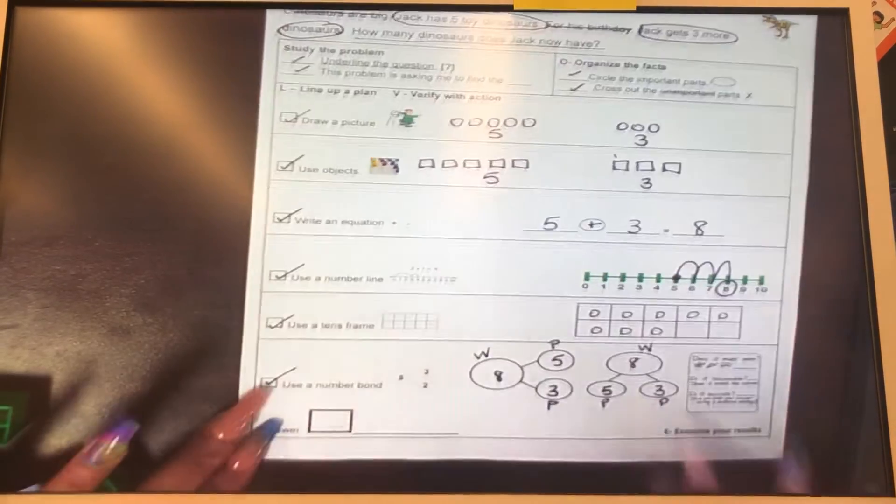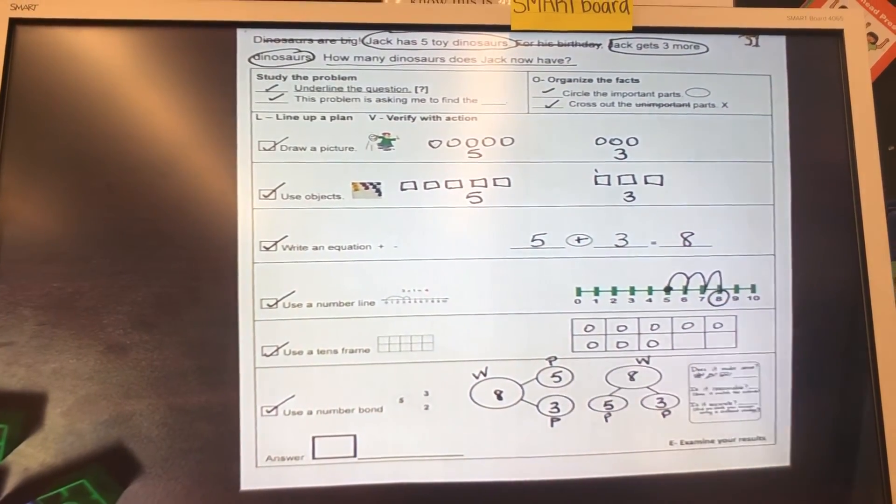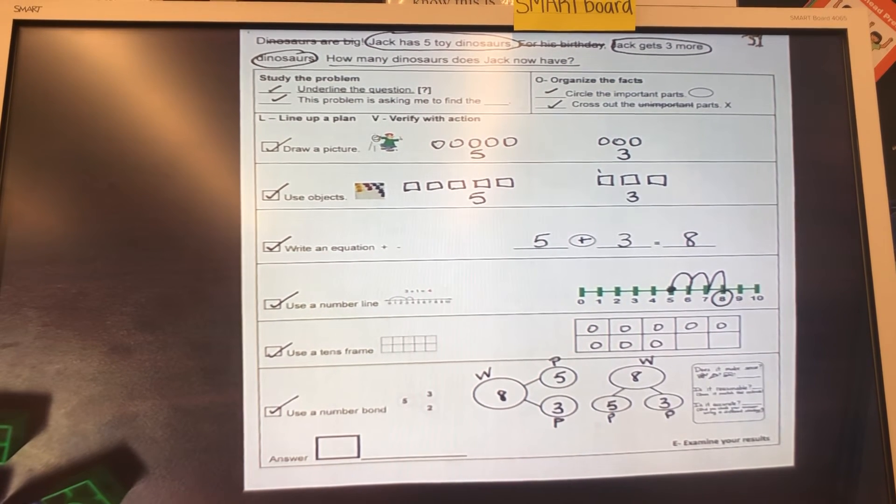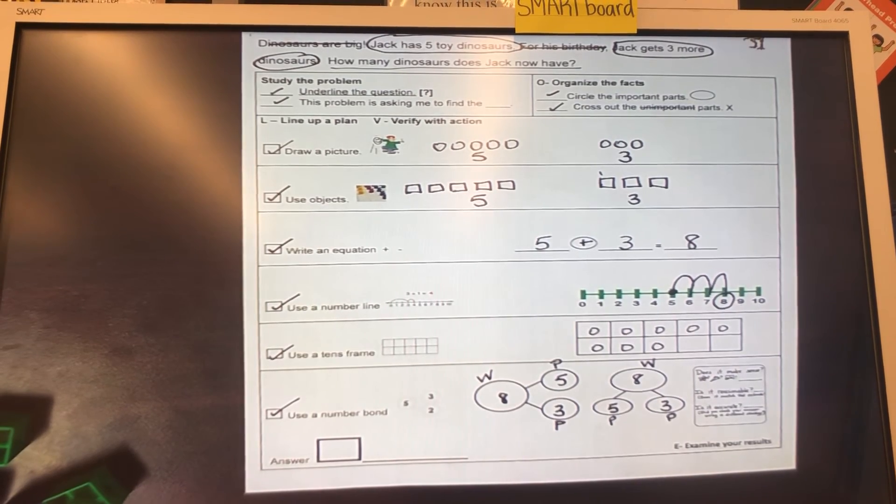So guys, we did all our strategies. And we know that when Jack had his five toy dinosaurs and he got three more, we put them together. They will have eight dinosaurs all together.